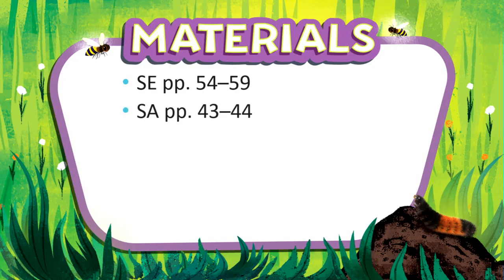Today you need your student edition pages 54 through 59 and your student activities book pages 43 and 44. In the last lesson we started to learn about the needs of plants. So what do plants need to live and grow? Well, they need light and air, water, dirt and space. Today we're going to talk about the different parts of plants that God designed to work together so that they can live and grow.